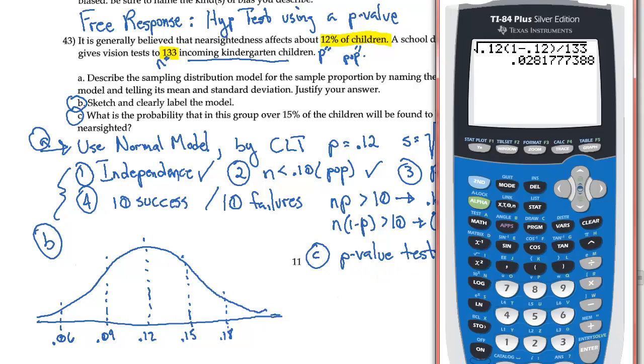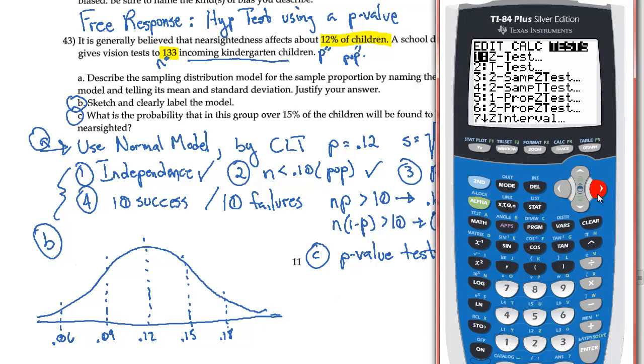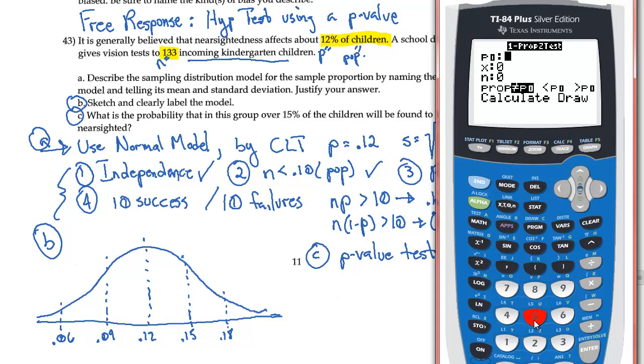So I'm going to go to calculator. I'm going to hit the all-powerful stat button. I'm going to scroll over to test. And now I need a one-proportion Z test because I'm using the normal model. So I have a Z score that I'm looking at. It's a one-proportion Z test, so it's number five. Now my null hypothesis is that I'm at 12 in the center. For my X, it says 15%, so I need 0.15 of the 133.